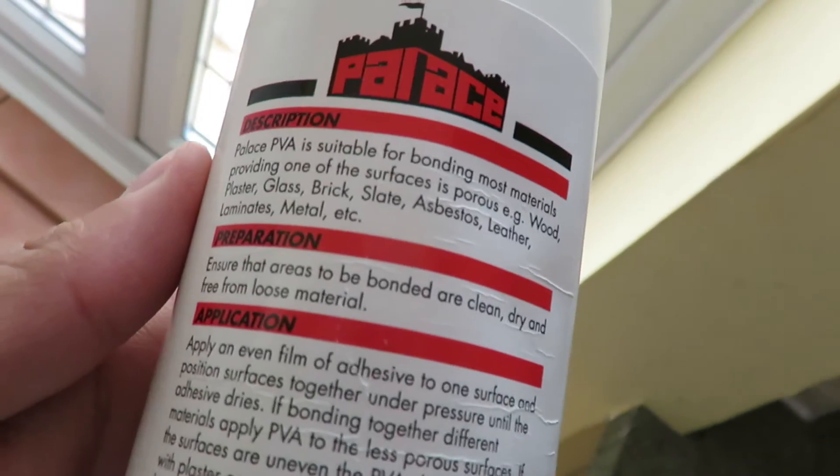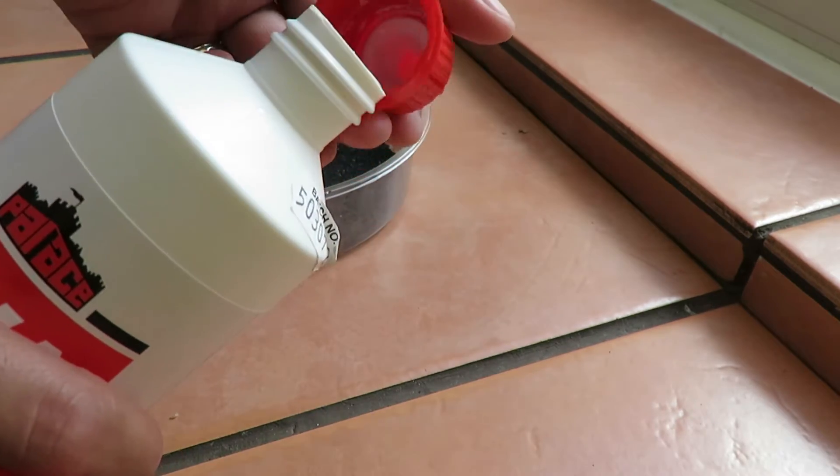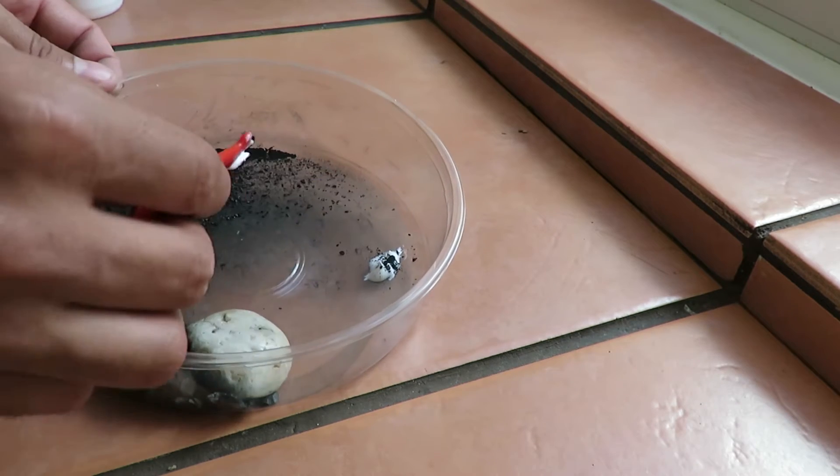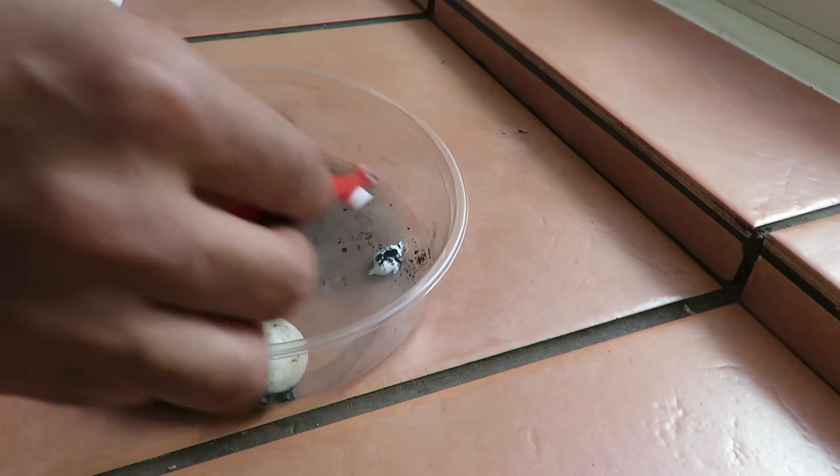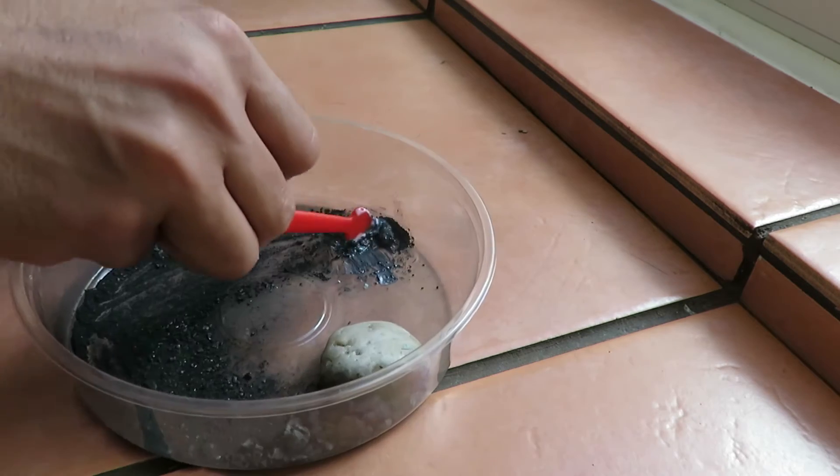PVA is polyvinyl alcohol, basically the white glue that you use to stick papers together. It's a very popular type you can buy from any stationery. Mix it with a lot of the charcoal powder after you make it a powder, and off you go.